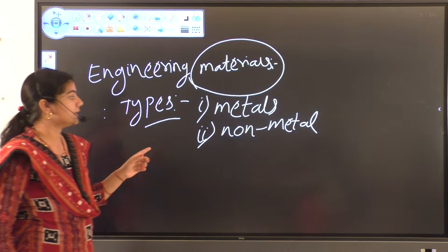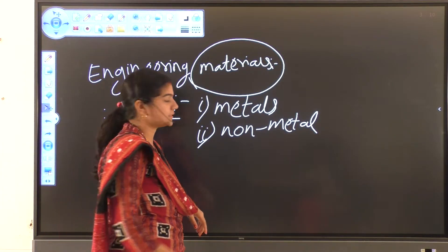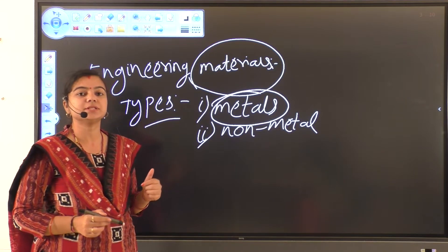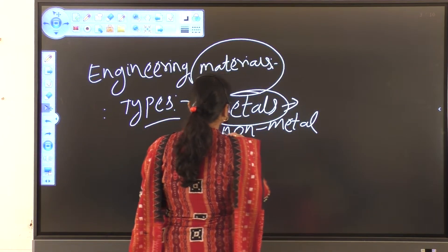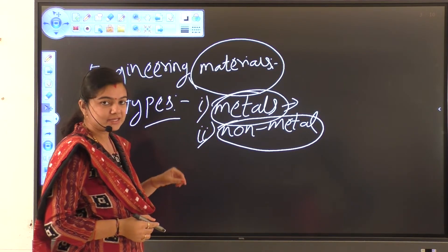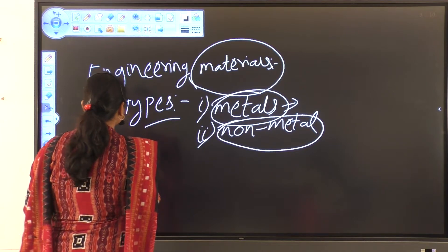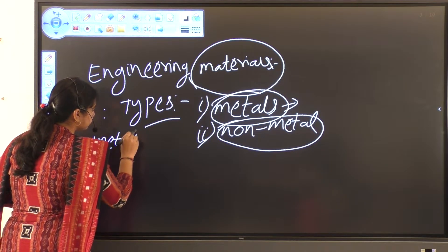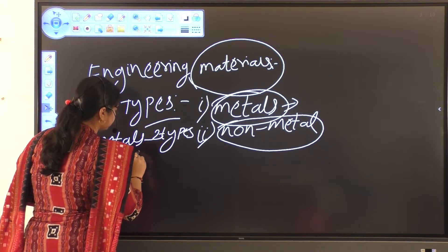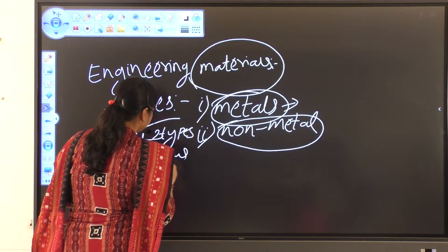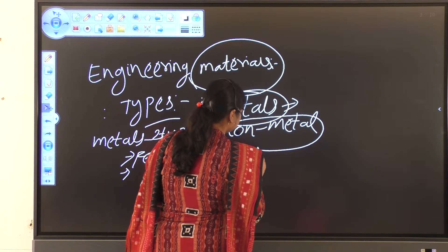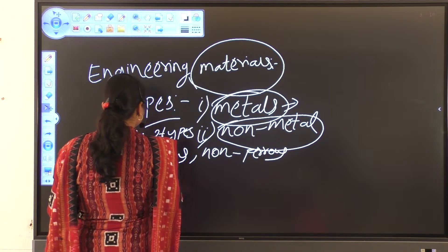Now we discuss what is Metals and what is Non-Metals one by one. First, what is Metals? Metals means which contain Iron, or where the main constituent is Iron, is known as Metals. Second one is Non-Metals, which means which have no Iron. Metals are again divided into two types: first one is Ferrous and second one is Non-Ferrous.